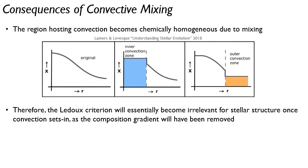So one consequence of this, as we talked about in the convection quick notes, that in the presence of a composition gradient, you need to consider the Ledoux criterion. Well, here we can see that for stellar structure, the Ledoux criterion is going to pretty quickly become irrelevant once your convection sets in, because the composition gradient is completely erased.